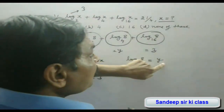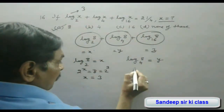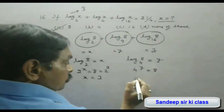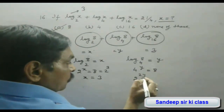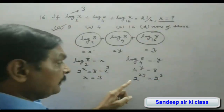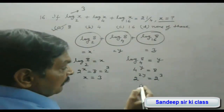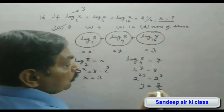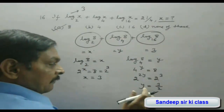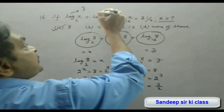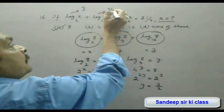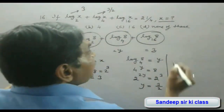For the second term: log 8 to the base 4 = y means 4^y = 8. Writing 4 as 2², we get 2^(2y) = 2³, so comparing powers, 2y = 3, giving y = 3/2. The second term equals 3/2.